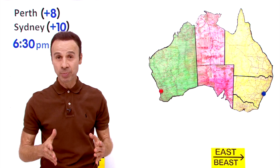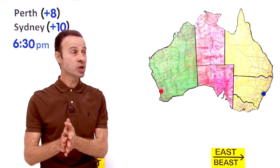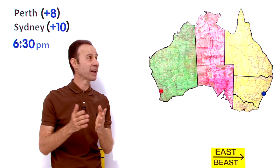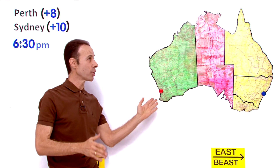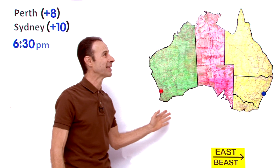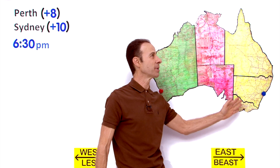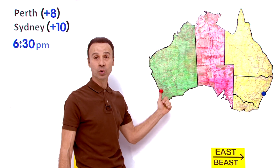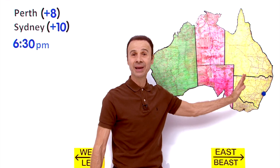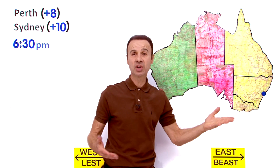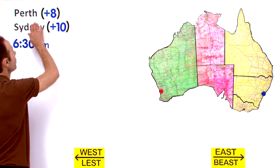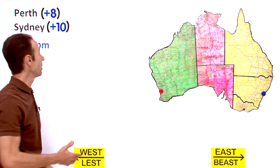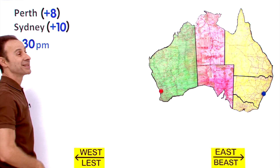Let's work on this word problem involving Joshua who wants to call his dad in Sydney. Joshua is in Perth and he wants to call his dad in Sydney in the evening at 6.30pm Sydney time. What time must he call from Perth in order for it to be 6.30pm in Sydney? Well, Perth is UTC+8 and Sydney is UTC+10 standard time.